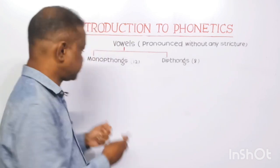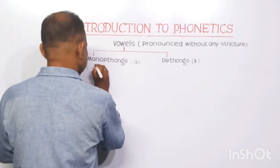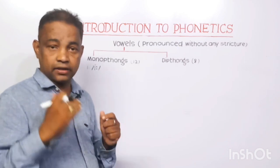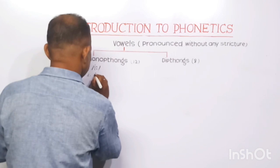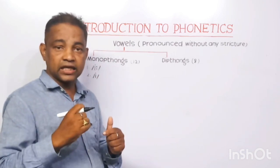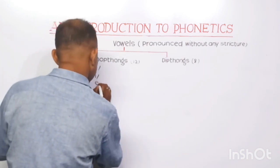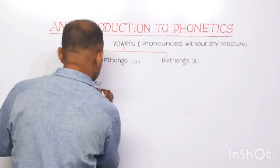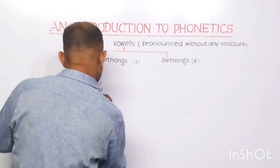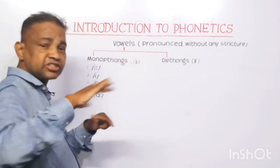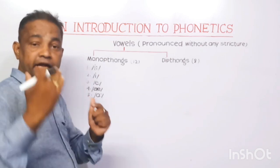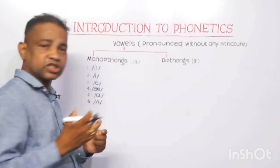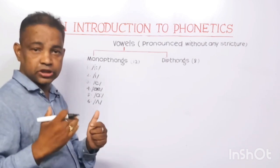Let us have a look at the phonemes. Number one is a long sound that sounds like 'ee.' Number two is a short sound that also sounds like 'i.' Number three is 'e.' Number four is 'a.' Number five is a long sound — for example, P-A-R-T, 'part' — a long 'aa' sound. Number six is a short sound, like in 'cut.'